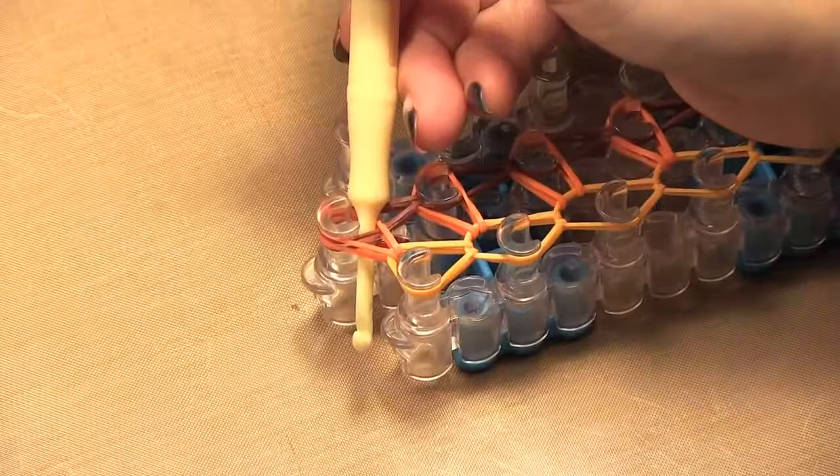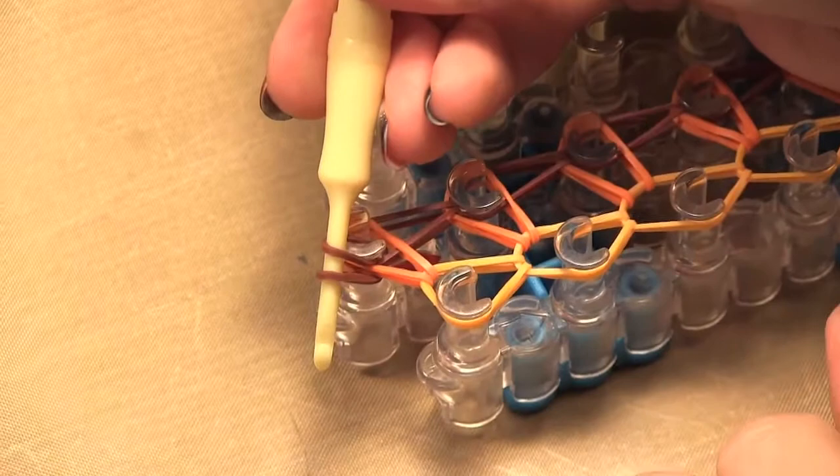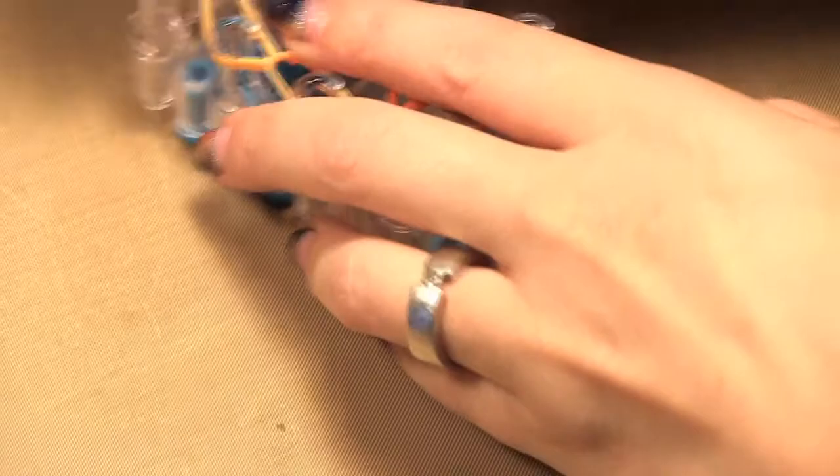So I finished moving all the elastics onto the pegs. But what we need to do now is just secure the end. We put our hook through, take an elastic, pull it through and put that one on and then push it up.